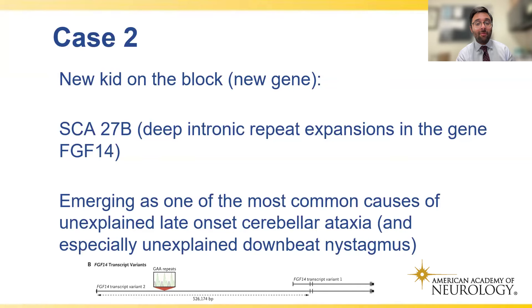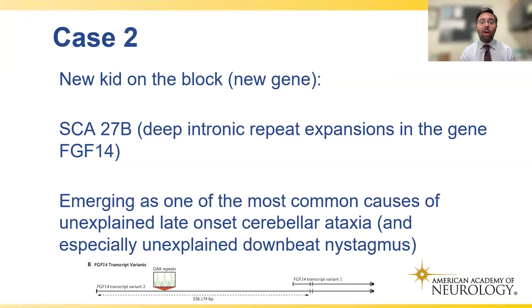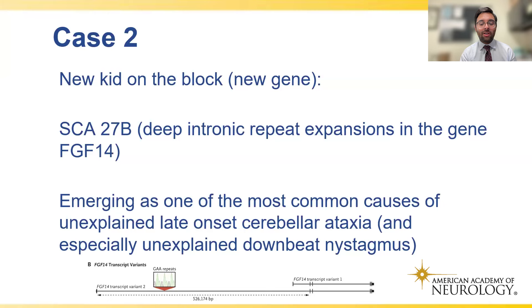A new etiology worth highlighting is SCA27B, one of the most recently described spinocerebellar ataxias. It's caused by a deep intronic repeat expansion in the FGF14 gene. In just the last couple of years it has emerged as one of the most common causes of unexplained late-onset ataxia and especially unexplained downbeat nystagmus. Many patients in our clinic who previously had unexplained progressive ataxia are now turning out to have SCA27B. This is something that will appear on board exams and be discussed widely among neurologists.